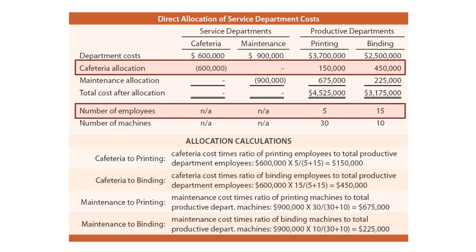Let's focus on the cafeteria. The cafeteria costs $600,000, and we're going to directly allocate that cost to printing and binding — our two productive departments: $150,000 to printing and $450,000 to binding. We did that based on the number of employees in each productive department. Printing employed five persons and binding employed fifteen persons. So on a pro-rata basis, five-twentieths of the total cost goes to printing and fifteen-twentieths of the total cost goes to binding.